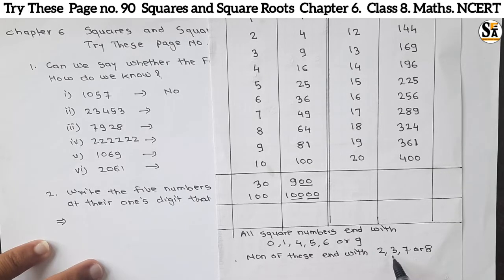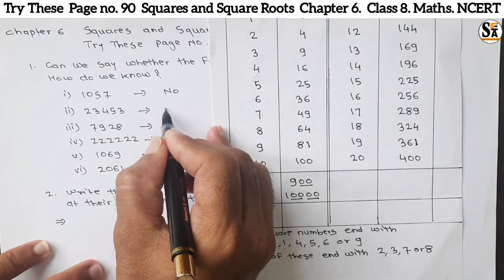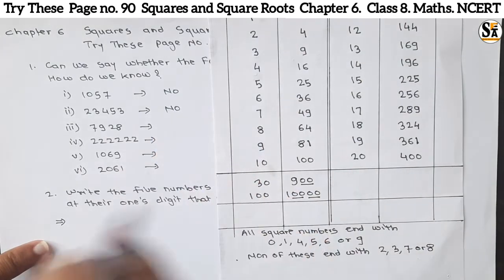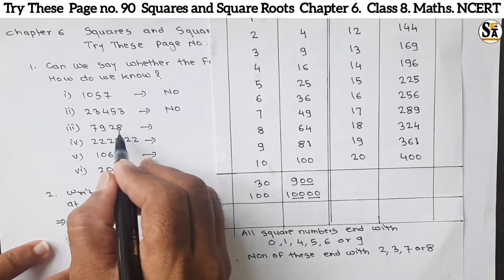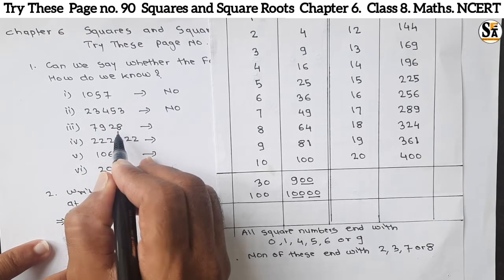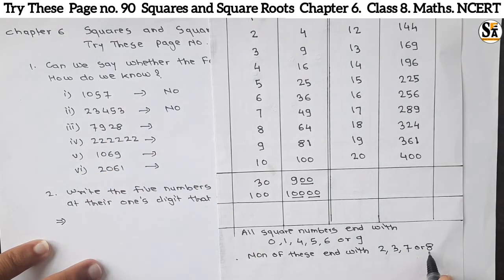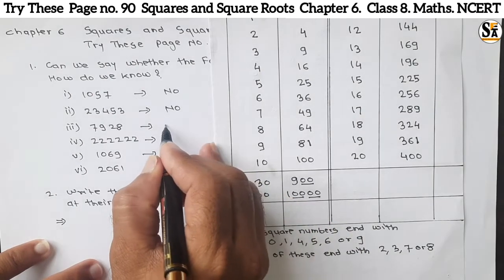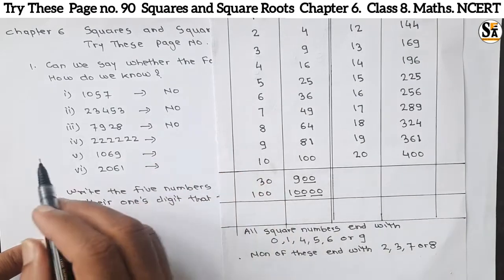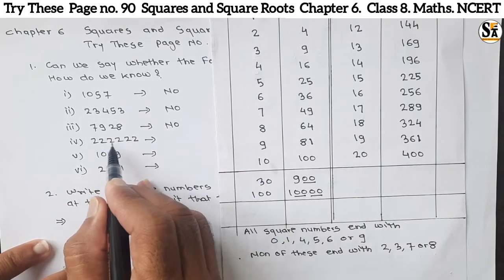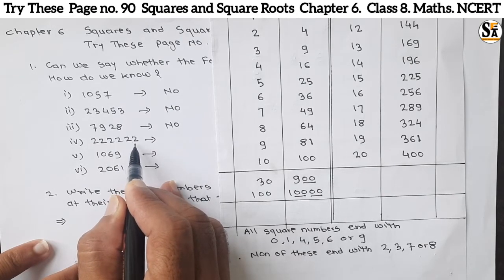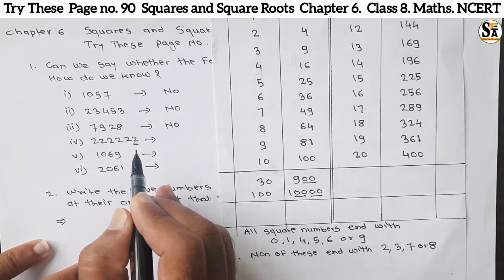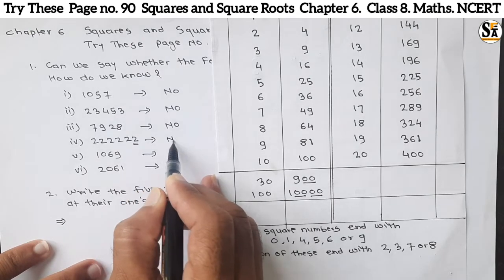A perfect square number cannot end with 3, so 23453 is also not a perfect square number. Next number: 7928. Here 8 is at the unit place. The same rule applies — a perfect square number cannot end with 8, so it is also not a perfect square number. Now 22222222: here the unit place is 2, so it is also not a perfect square number.